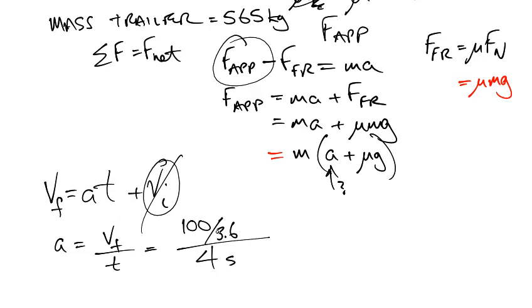And that's going to give us 100, enter, 3.6 divided by 4 divided by. And that's going to give us an acceleration of 6.94 meters per second squared. And now look what I do.